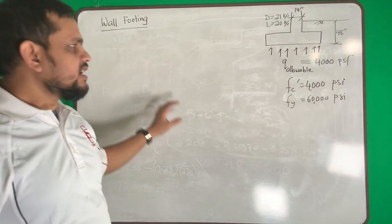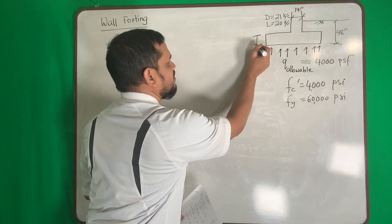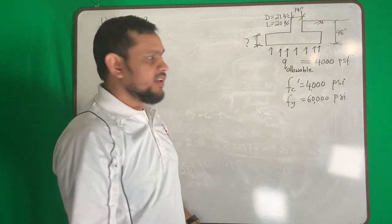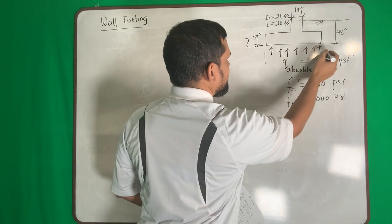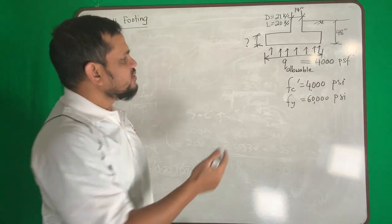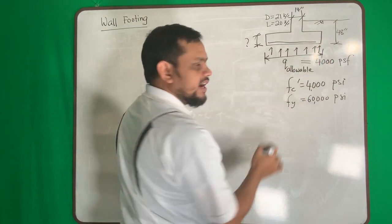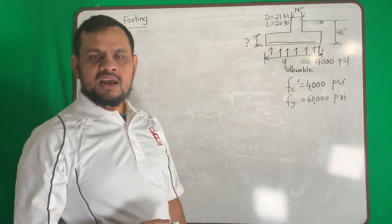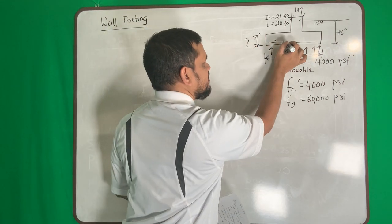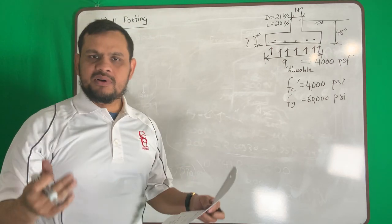Wall footing design means we need to find the size — the thickness and the width of the footing. We also need to determine the reinforcement: the main reinforcement goes one way, and the temperature and shrinkage reinforcement goes the other way. That is our design target.